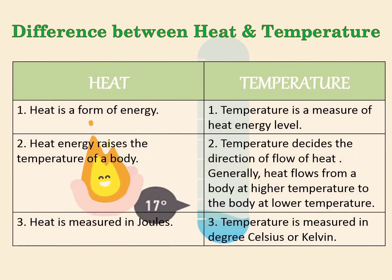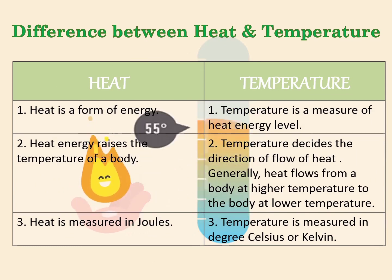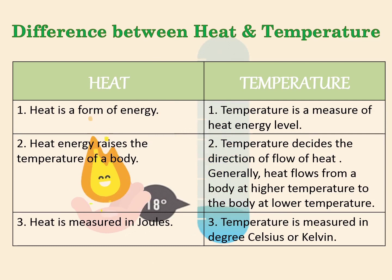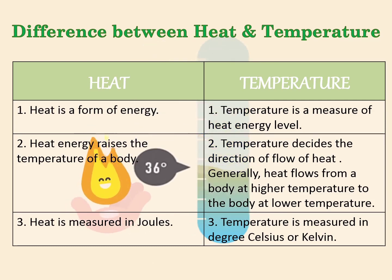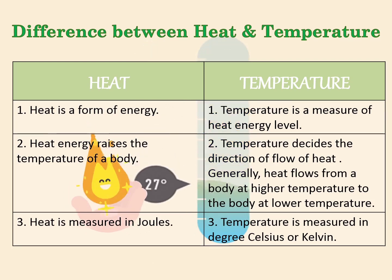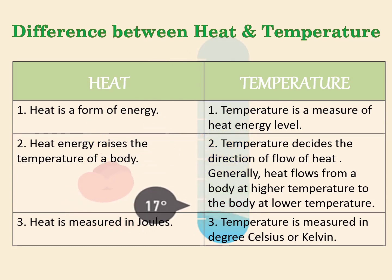Difference between heat and temperature: Number 1, heat is a form of energy while temperature is a measure of heat energy levels. Number 2, heat energy raises the temperature of a body, while temperature decides the direction of flow of heat. Number 3, heat flows from a body at higher temperature to the body at lower temperature. Heat is measured in Joules while temperature is measured in degrees Celsius or Kelvin.